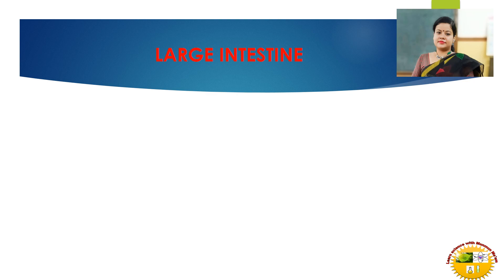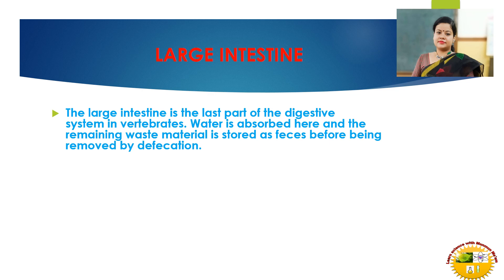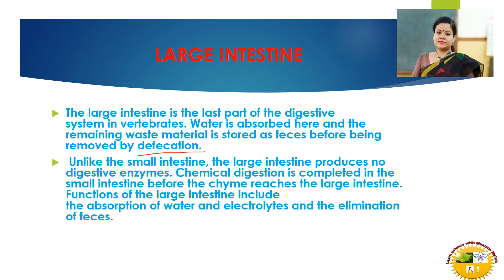The last part of the digestive system is the large intestine. It is the last part of the digestive system in vertebrates. Water is absorbed here and the remaining waste material is stored as feces and removed by defecation — the process of removing undigested food. Unlike the small intestine, the large intestine produces no digestive enzymes; chemical digestion is completed in the small intestine. The functions of the large intestine include absorption of water and electrolytes, which are salts, and elimination of feces.